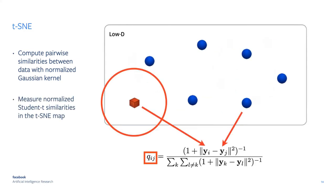In the low-dimensional space, we do something very similar. For each high-dimensional input we have a two-dimensional point, and we center a distribution over each point and measure the density of all other points. This gives us another measure of similarity called q_ij. So p_ij measures local similarities in the high-dimensional space and q_ij measures local similarities in the low-dimensional map.